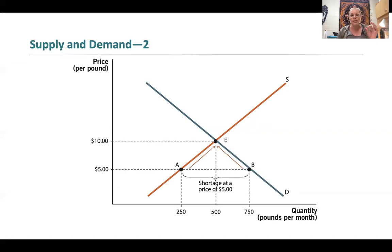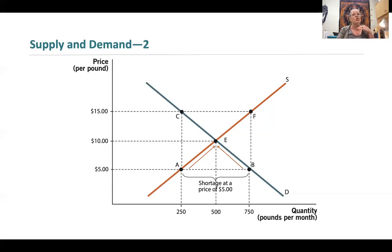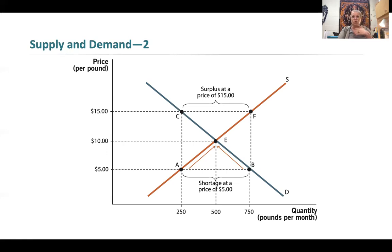Prices will naturally fluctuate and move upward towards equilibrium — when more people want something than is available, prices will rise. Now let's look at a price set too high — fifteen dollars per pound. At fifteen dollars, the quantity demanded is at point C: 250 pounds, but the quantity supplied is at point F: 750 pounds. Quantity supplied exceeds quantity demanded — this is a surplus of 500 pounds. Prices will fall towards equilibrium so that inventory gets bought up.